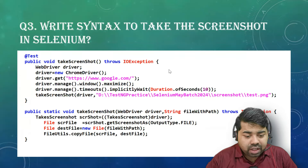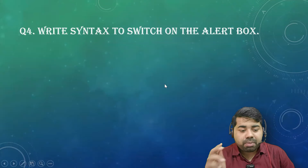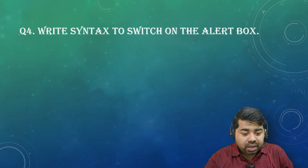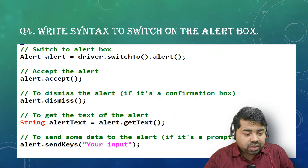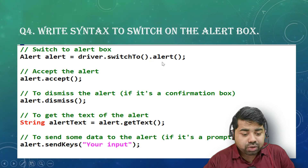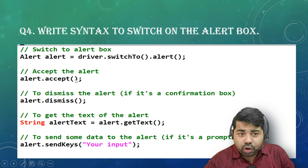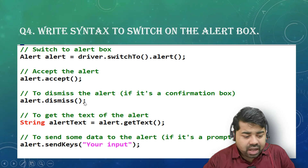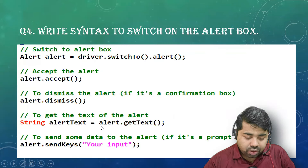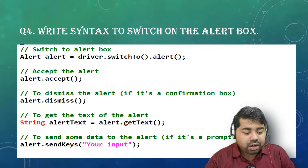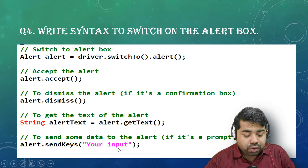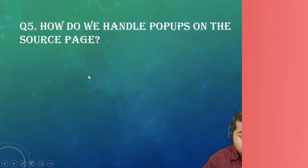Writing the code is fine, but when you are not able to explain it — that is the problem. Next question: 'Write the syntax to switch the alert box.' Alert is an interface. You use driver.switchTo().alert() and inside this we have the accept() method — which clicks OK — and the dismiss() method — which clicks Cancel. You can also capture text on the alert using getText(), and you can enter a value using sendKeys().